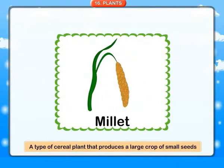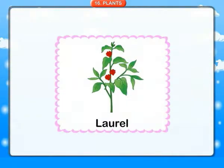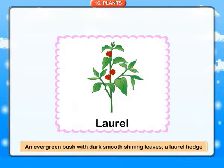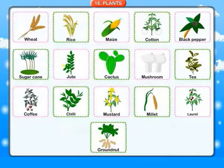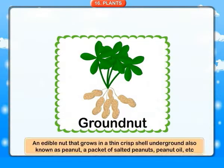Millet: a type of cereal plant that produces a large crop of small seeds. Laurel: an evergreen bush with dark shining leaves. Groundnut: an edible nut that grows in a thin crispy shell underground, also known as peanut. Peanut oil, etc.